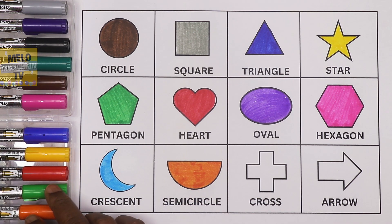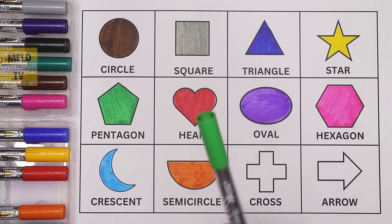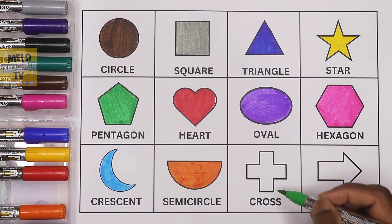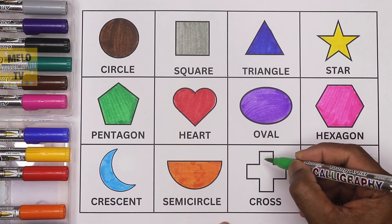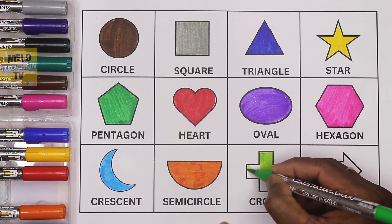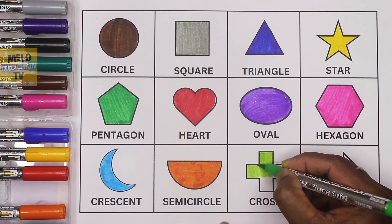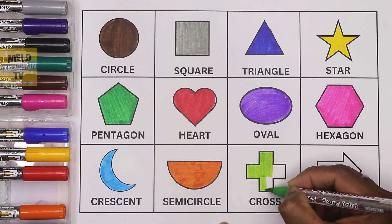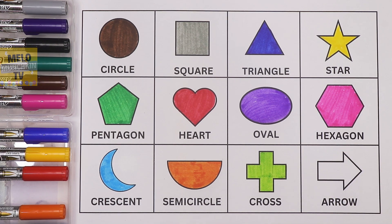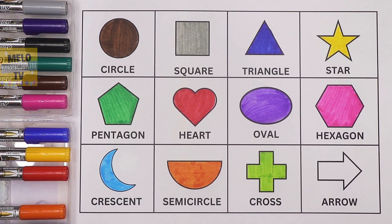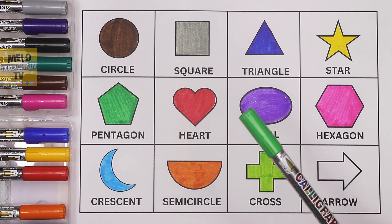Next I'll take green color to color this shape. This is a cross. Okay, so this is now a green cross, where cross is the shape and green is the color.